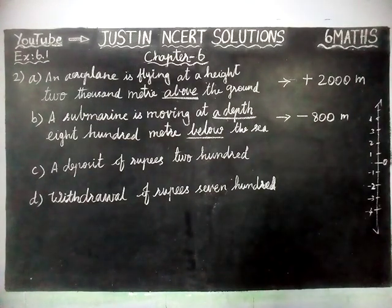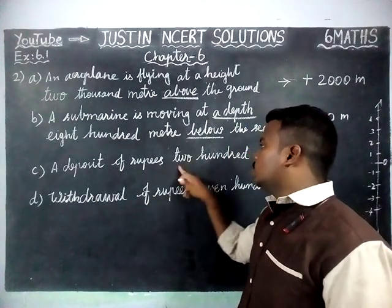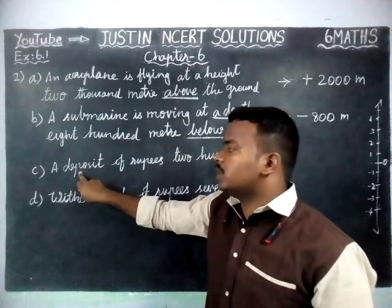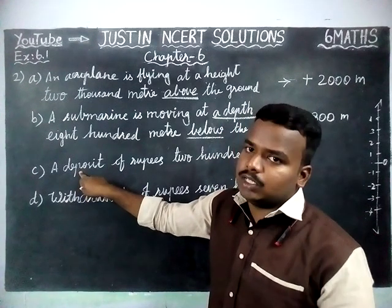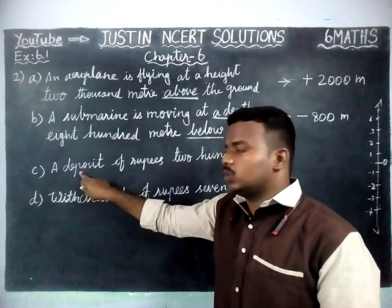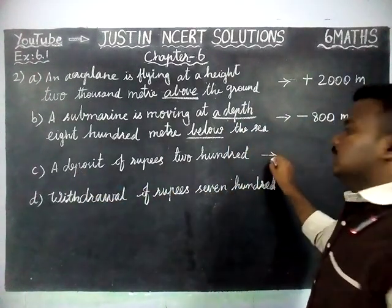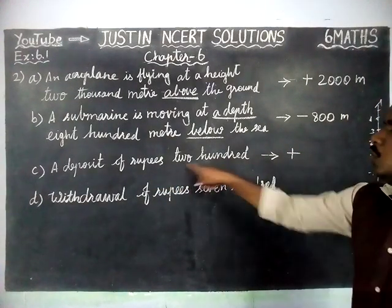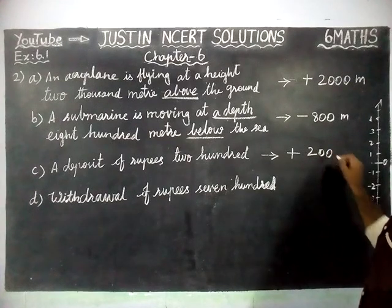Part C: a deposit of rupees 200. The meaning of deposit is that an amount is deposited into our account. When we are depositing, our amount will be increased, so that is plus — the amount is added. So deposit equals plus 200 rupees.